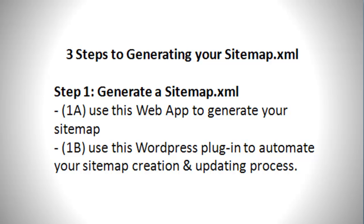Step 1: Generate a sitemap file. I have two options here. One is a web application that crawls your website and generates a sitemap for you to upload. The second option is a WordPress plugin designed to automate your sitemap creation and update process.